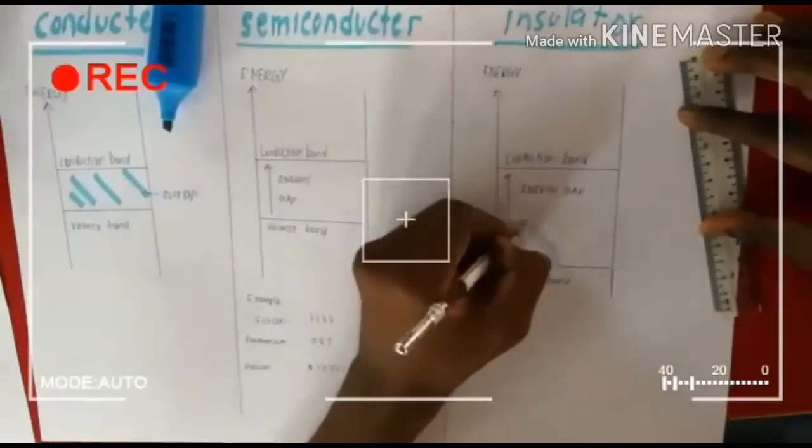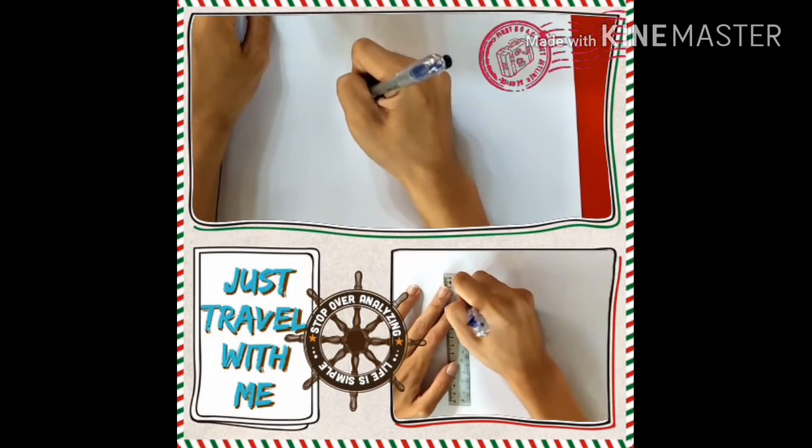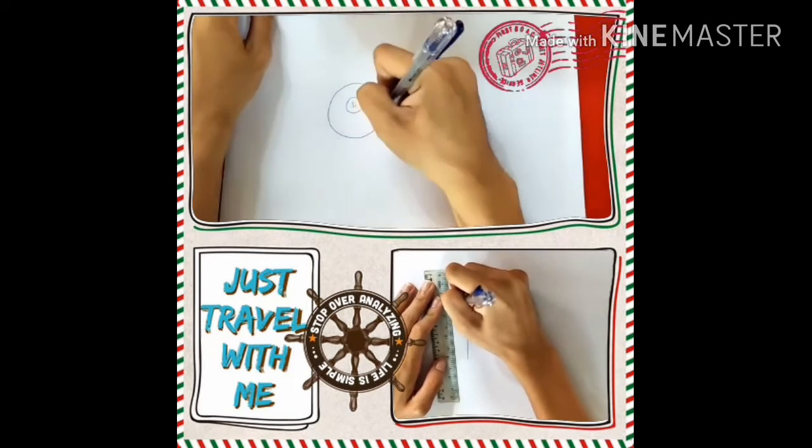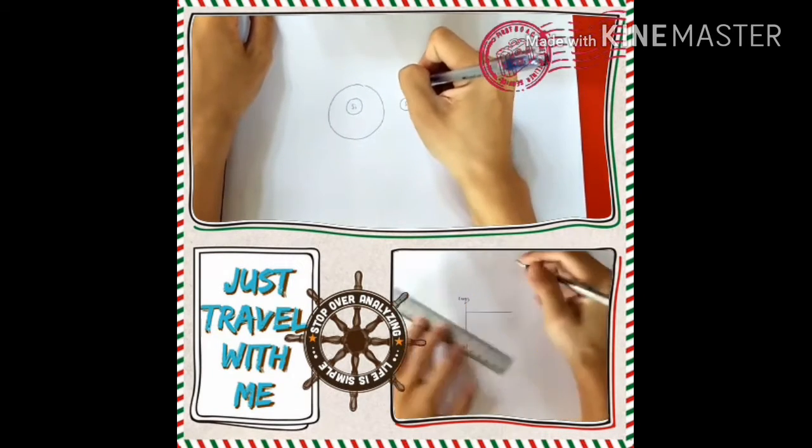If there is no external energy supplied to an intrinsic semiconductor, for example pure silicon crystal, the valence electrons have insufficient energy to escape to the conduction band.